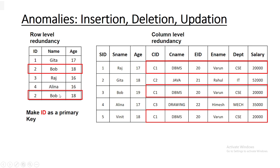It may be fine if a database is very small, like 10 or 15 entries. But in practice, databases are very large — they may have a few thousands to a few lakhs of entries. In such a huge database, if we have dependent data like this, it will be really difficult for the data administrator and will lead to three problems: insertion anomaly, deletion anomaly, and updation anomaly.